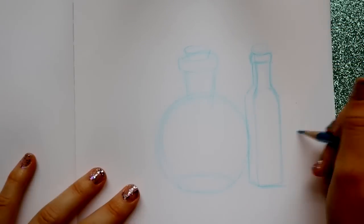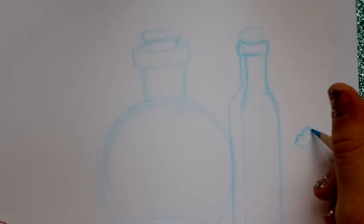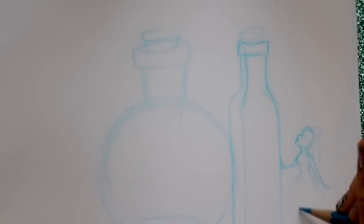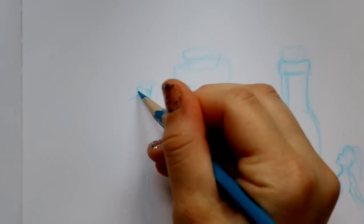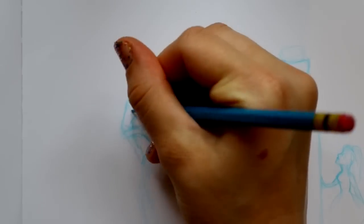All right, so I didn't get any sketching supplies in this particular box and they usually do send sketching supplies. So instead I went ahead and grabbed my Colorease blue pencil and my sketchbook because I thought this is going to look really cute in my sketchbook. So I went ahead and I started sketching everything out. So I started with my bottles.